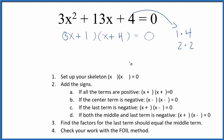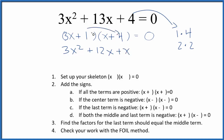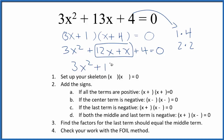Let's use the FOIL method to make sure we have this correct. First terms: 3x times x equals 3x squared. Outside: 3x times 4 equals 12x. Inside: 1 times x equals x. Last: 1 times 4 equals 4. So all of that equals 0. Adding the like terms gives us 3x squared plus 13x plus 4 equals 0, confirming we factored correctly.